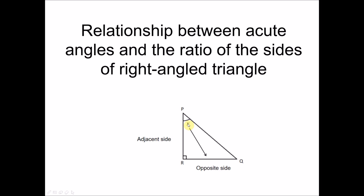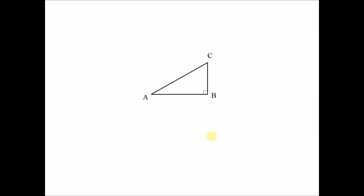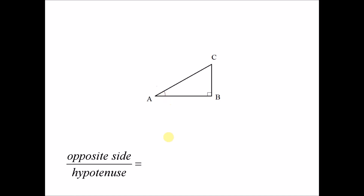Now we want to explore the relationship between a given acute angle X and the ratio of the sides of the right angle triangle. Using triangle ABC with angle X as the reference angle, we find the ratio of the opposite side to the hypotenuse: that is the length of BC divided by the length of AC.